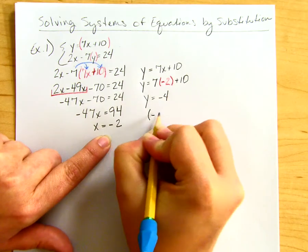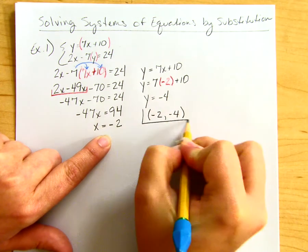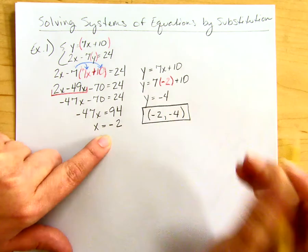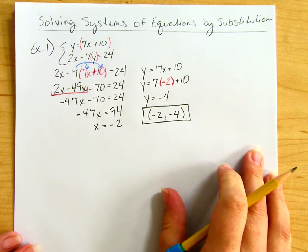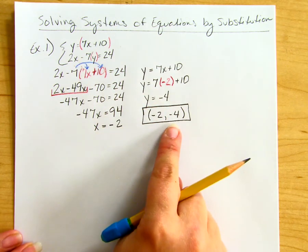The solution to the system is (-2, -4). Make sure you write it as an ordered pair, because when we graph these, the solution is where the two lines meet at the point (-2, -4).